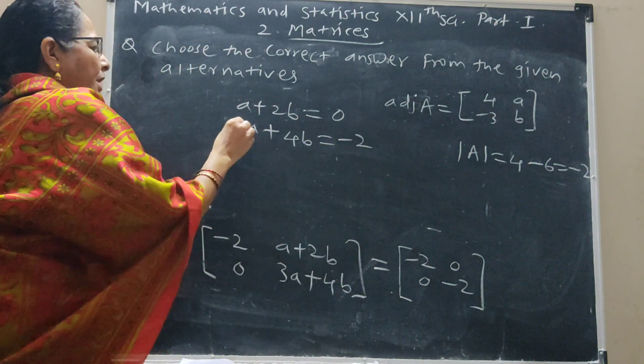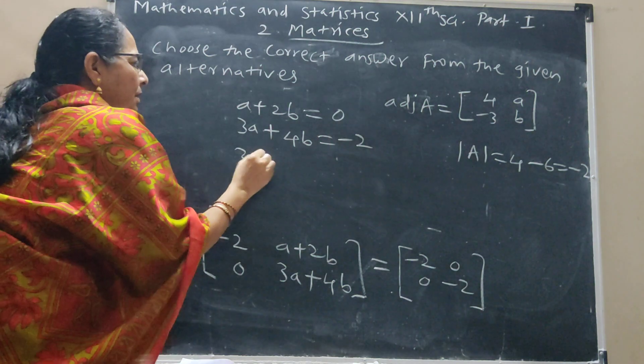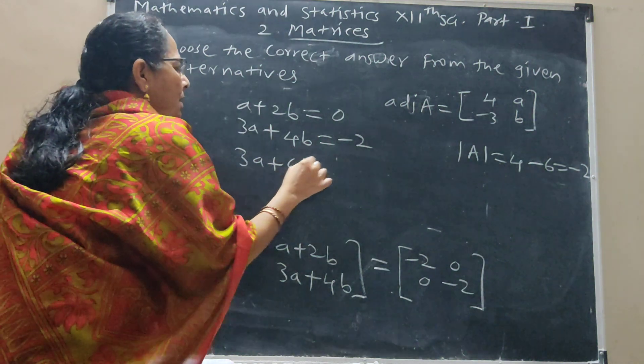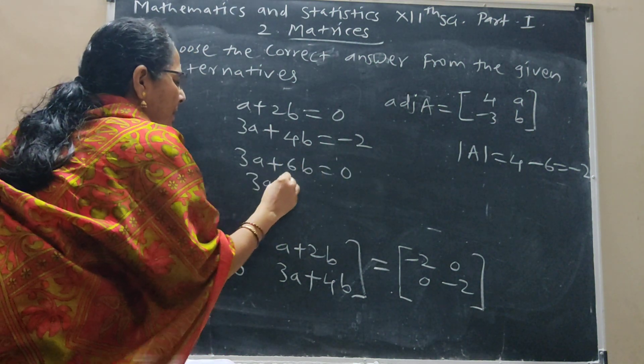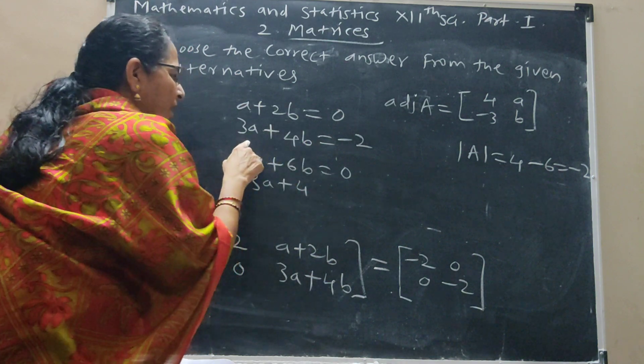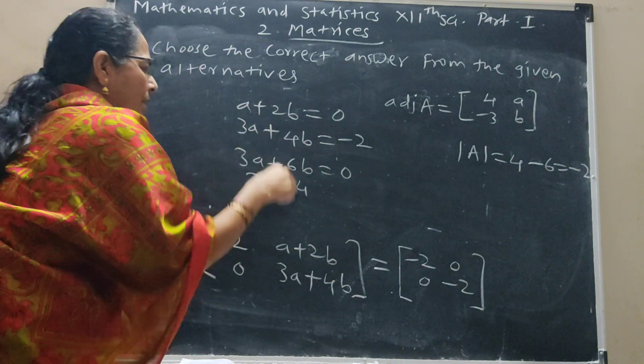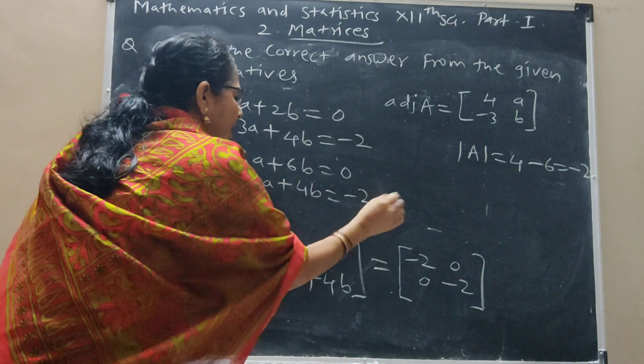Solving, so multiply here by 3: 3A, 6B, 0. 3A, 4B, multiply here by 1: so 3A, 4B, minus 2.